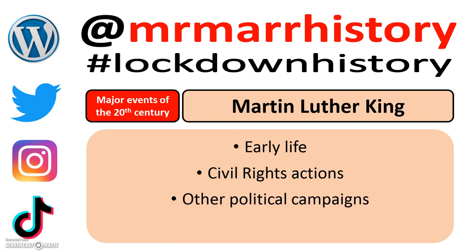King wasn't just involved in civil rights though — he had other political campaigns as well. For example, and often making him quite unpopular, he was against the Vietnam War. He believed it was not only a waste of money that could be better spent on tackling poverty at home, but that it unfairly affected black people who would be sent to the front as soldiers. He also set up what was known as a Poor People's Campaign, which aimed to tackle the problem of poverty faced not only by black people, but by white people as well.